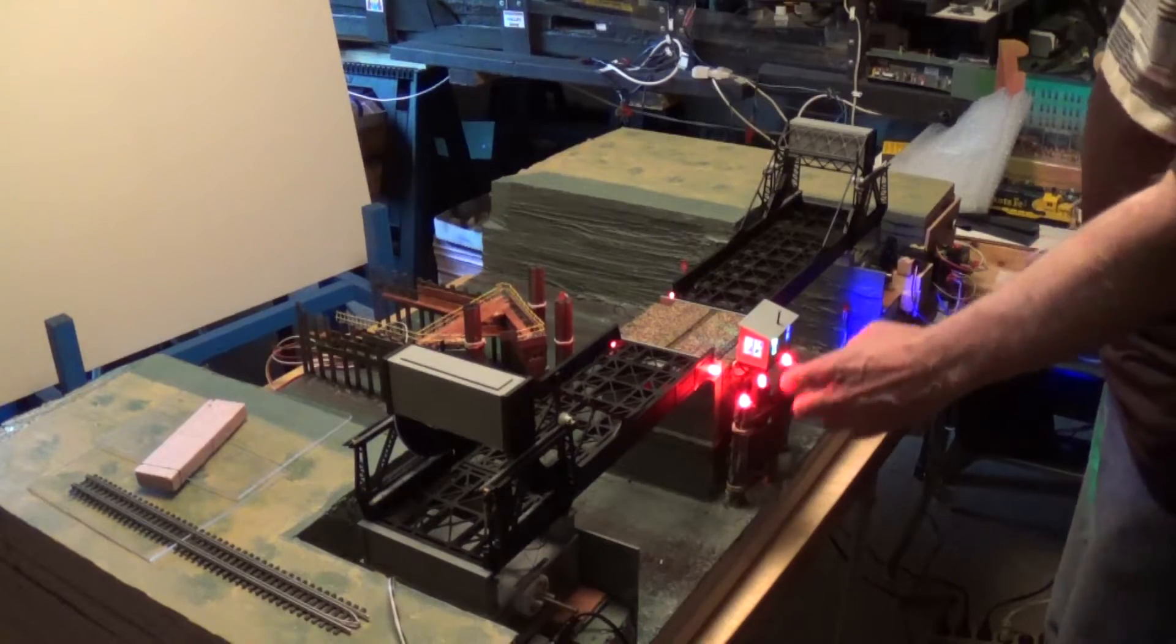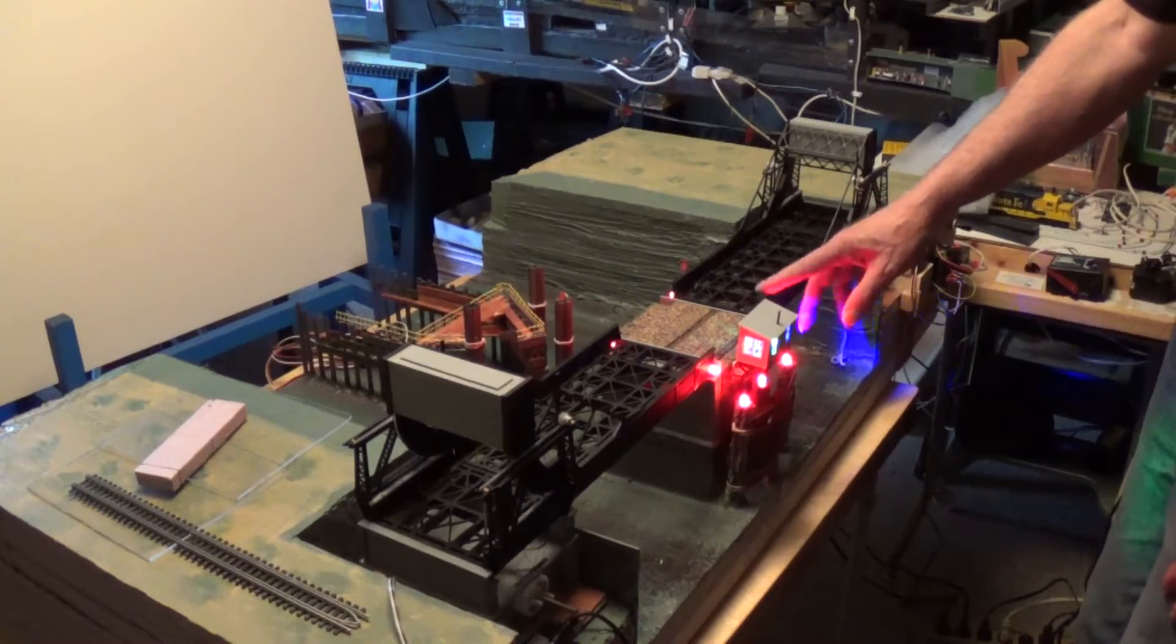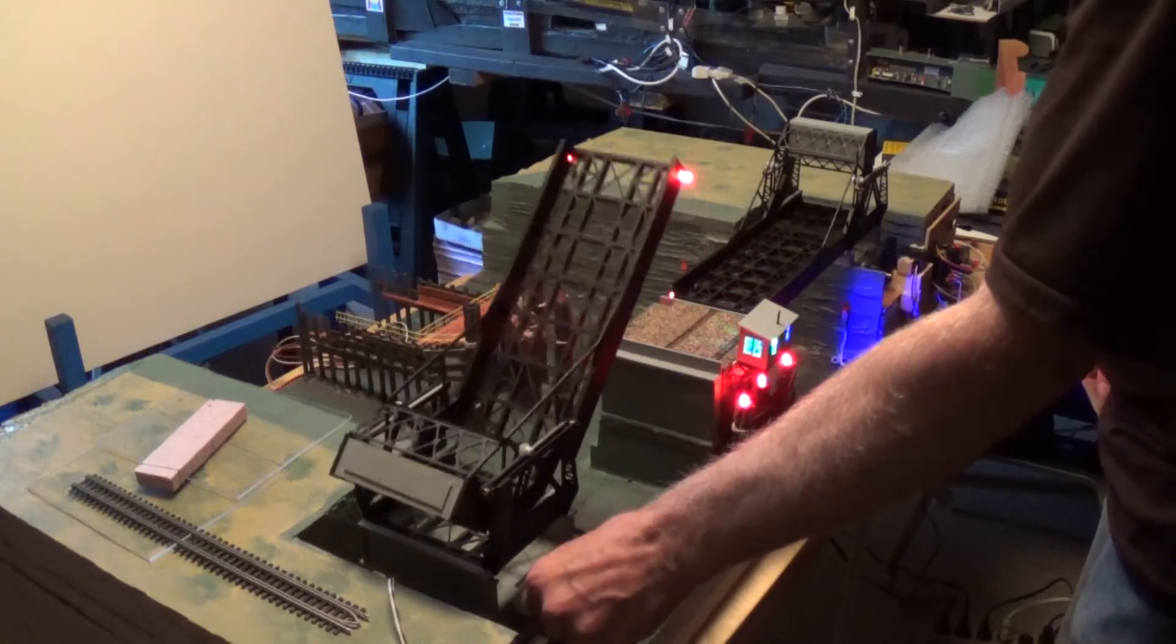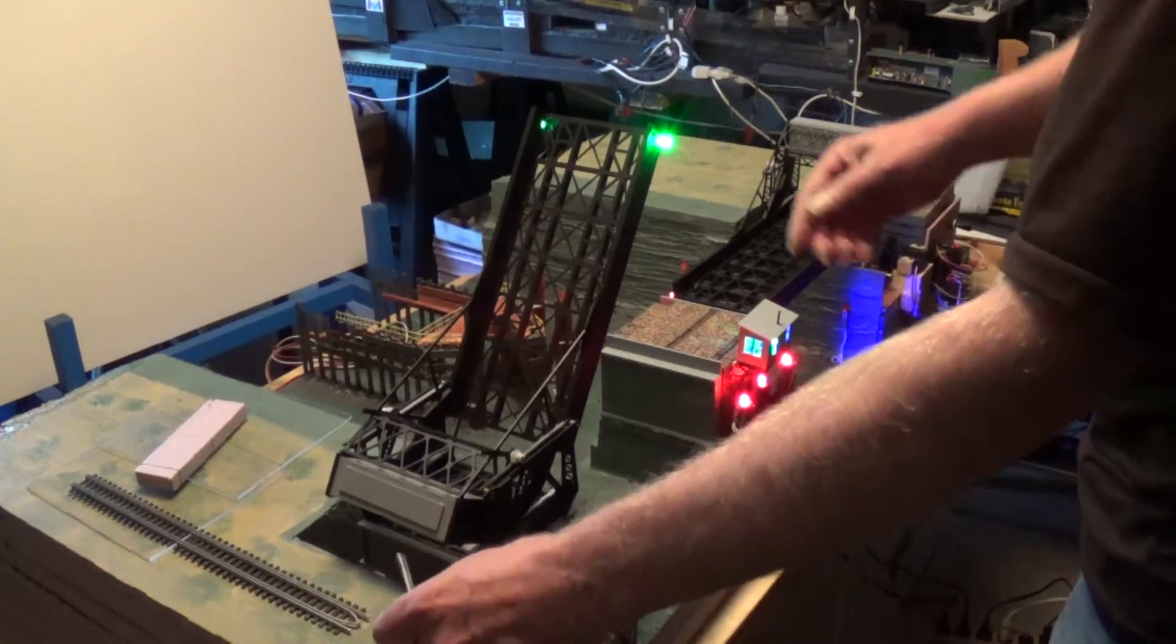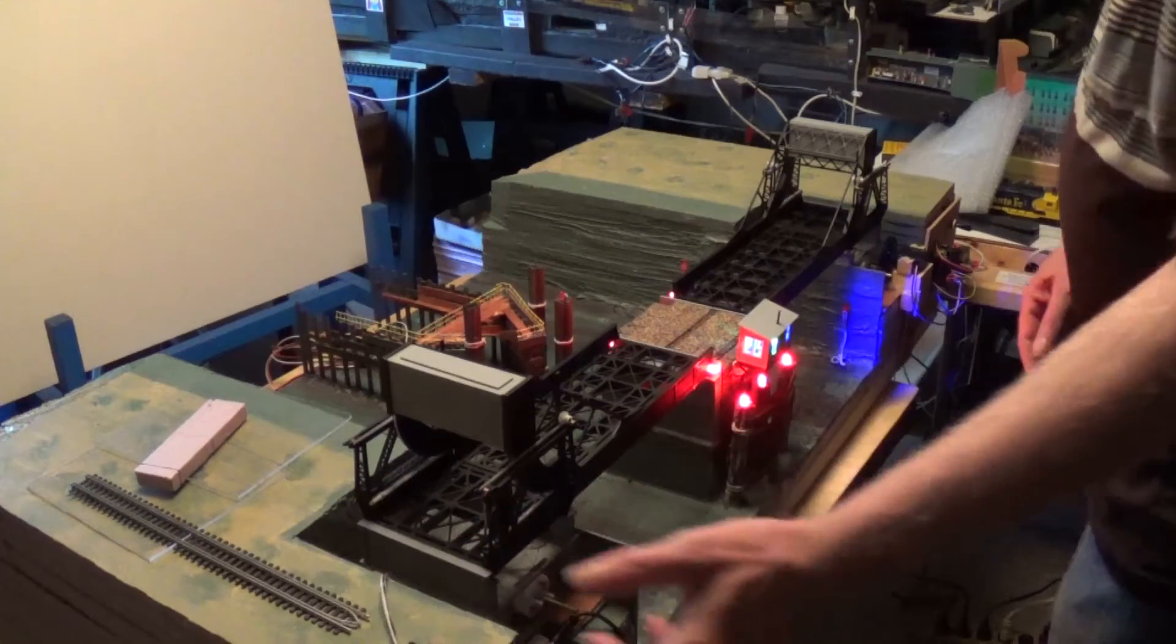This one controls these lights. Arduino powers the bridge lights. This bridge goes up and turns the lights green. Bridge goes down and turns the lights red.